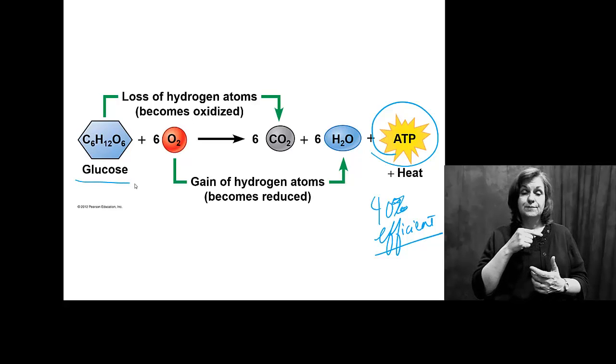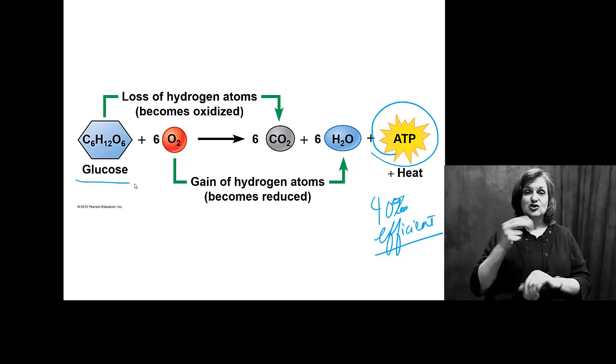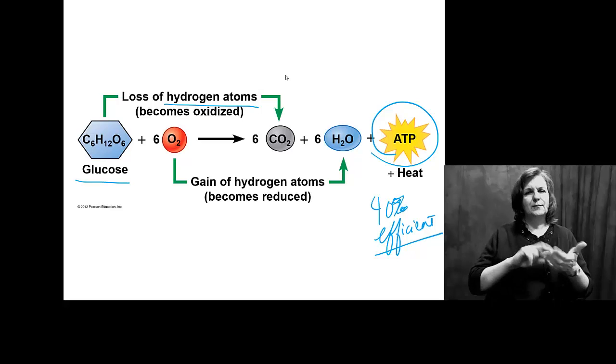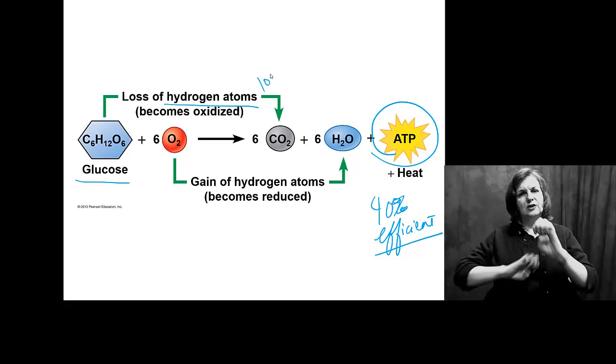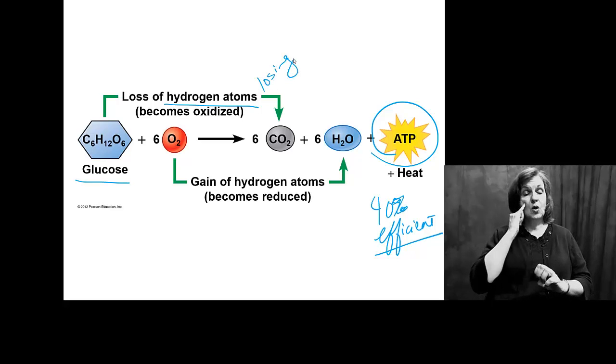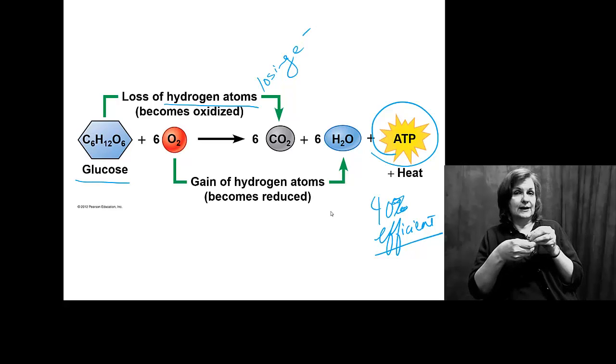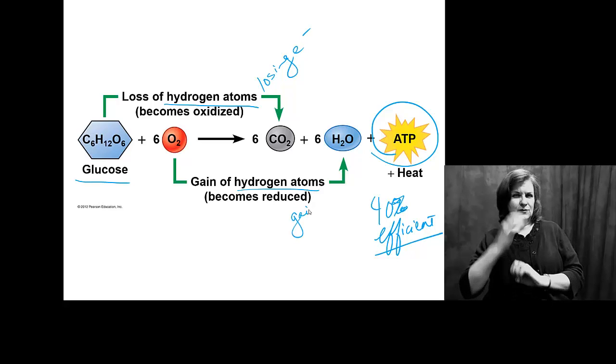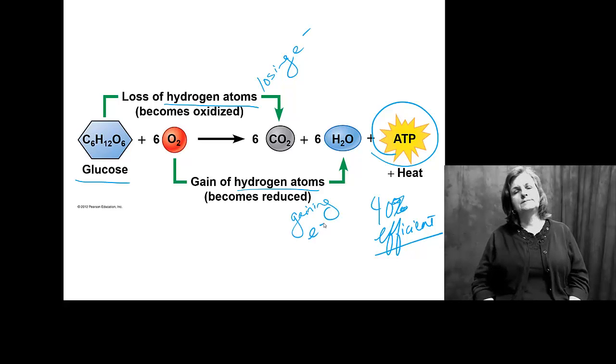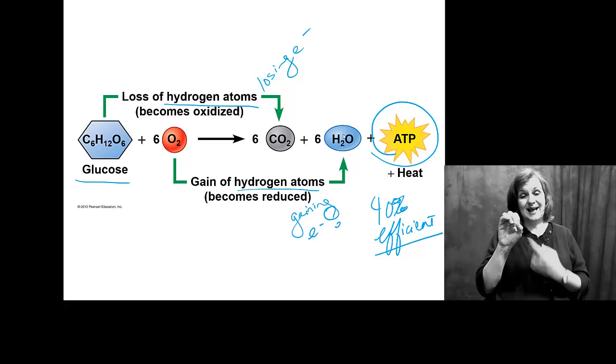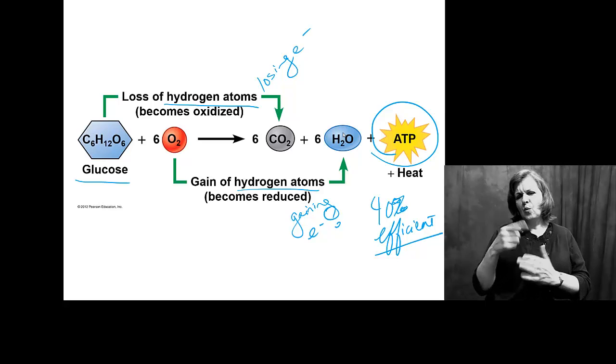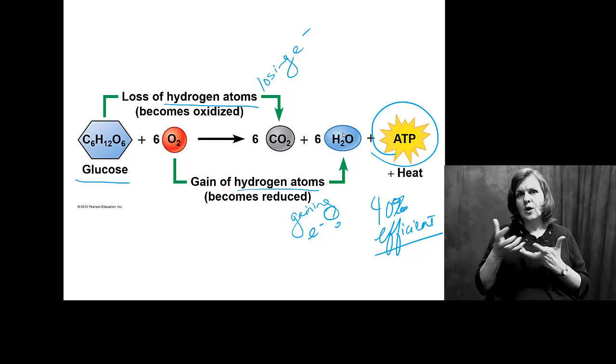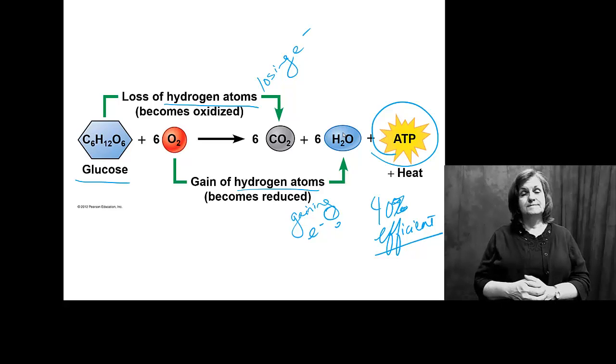So glucose is actually going to lose hydrogen atoms. And if you lose hydrogen atoms, you're also losing electrons. And if you're gaining hydrogen atoms, you're gaining electrons. Why? Well, if I make oxygen more negative, what does it want? It wants hydrogens.